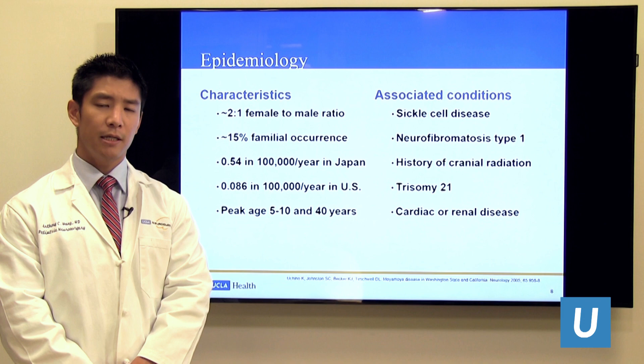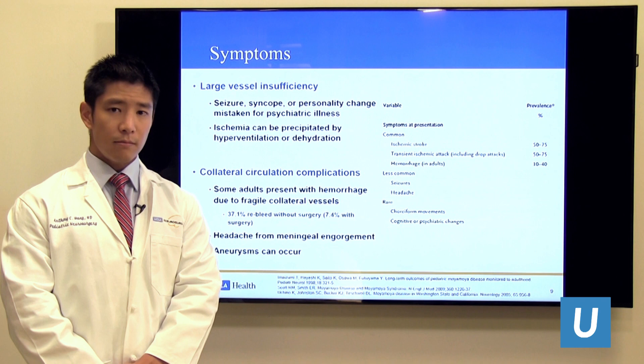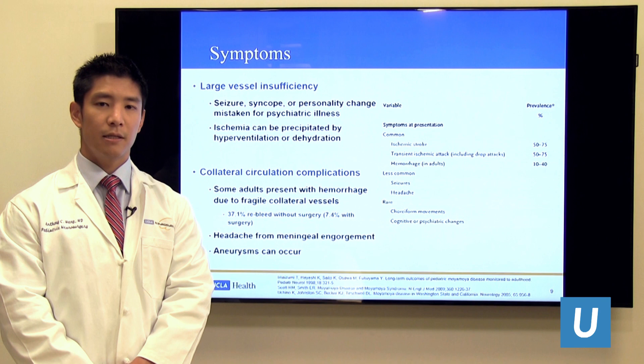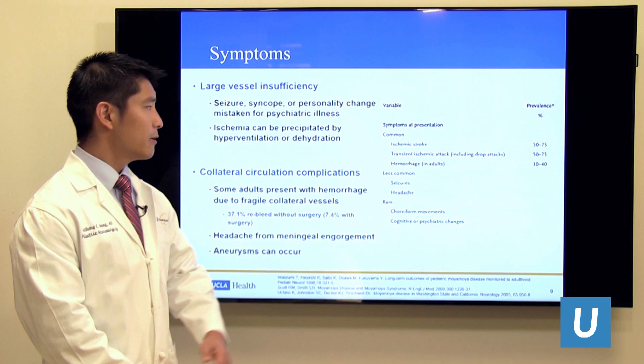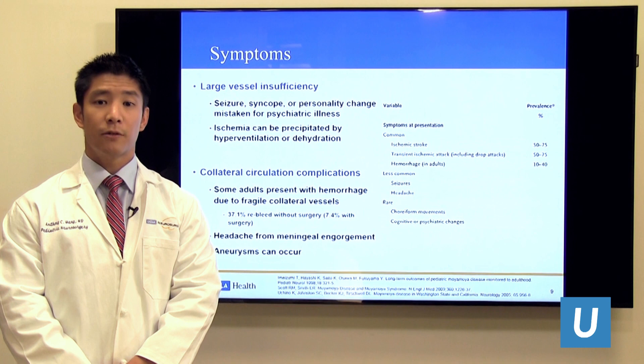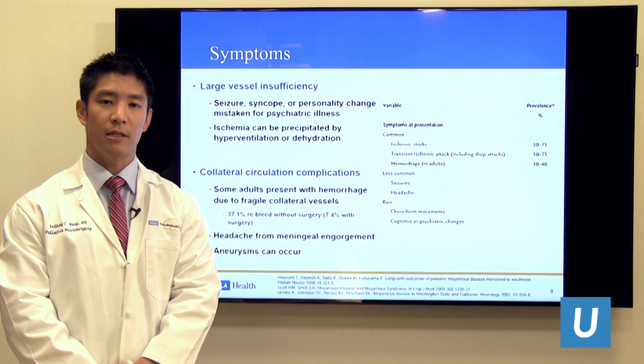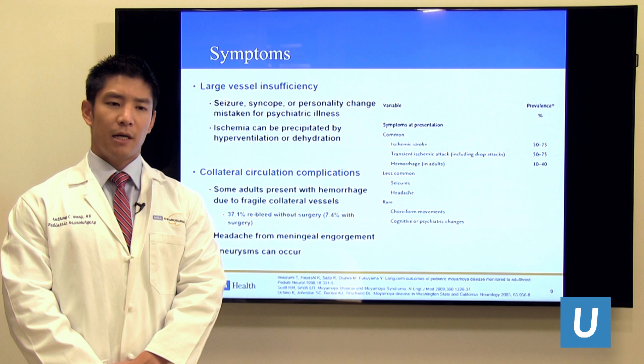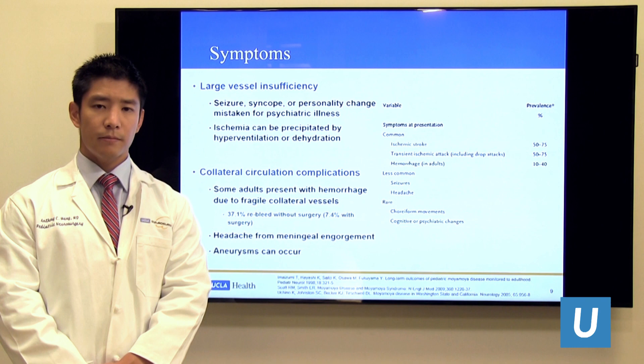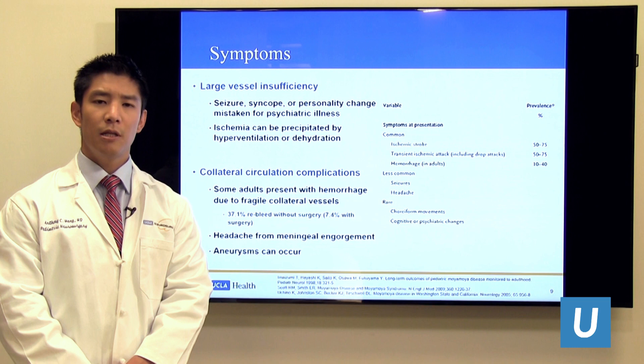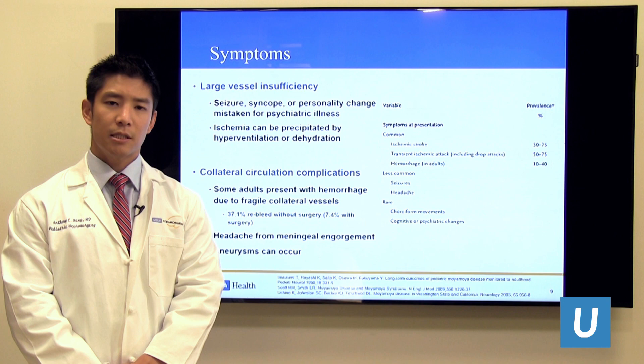Moyamoya most typically presents through ischemia — lack of blood flow to the brain. About 50 to 75 percent of the time, patients first discover they have Moyamoya after suffering a stroke or a transient ischemic attack (TIA). In adults, patients can also present with hemorrhage, because the collateral vessels that form are more fragile than native arterial trunks, and some of these vessels can bleed over time, especially with high blood pressure.